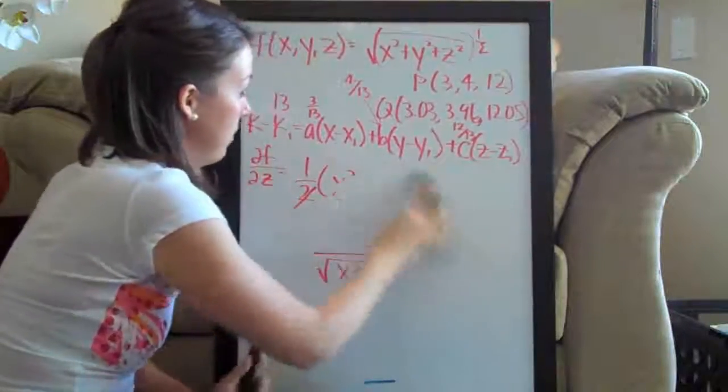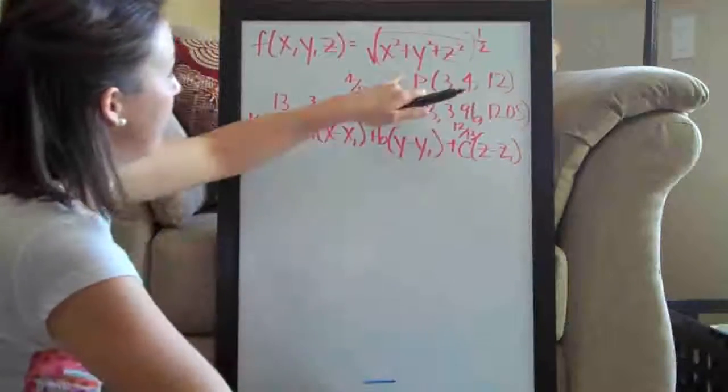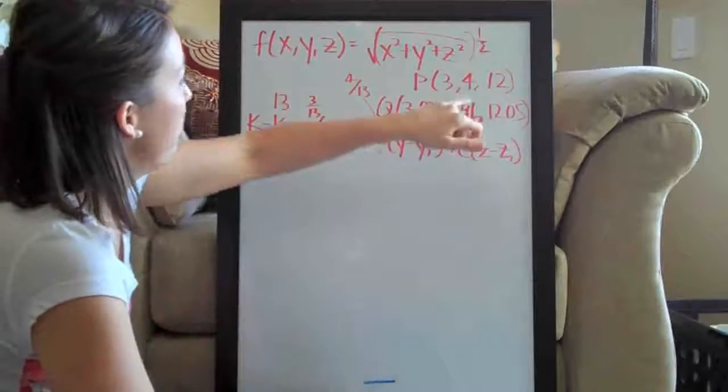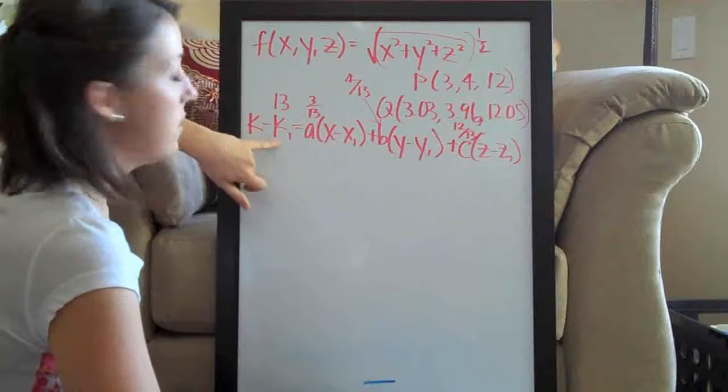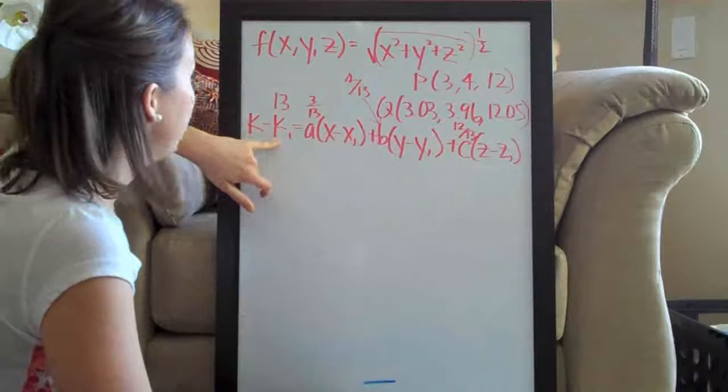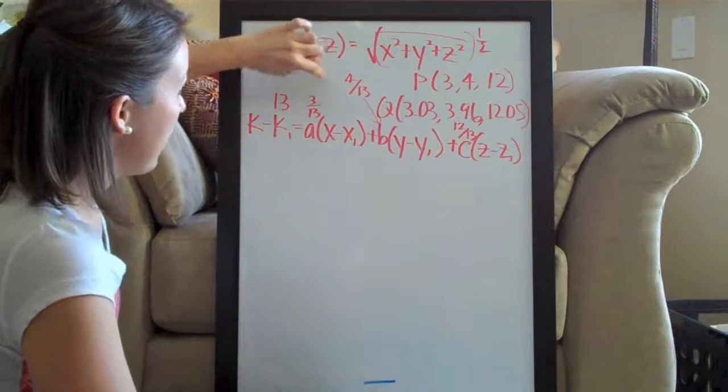So now that we've done, we plugged in the original point, we plugged in the point three, four, twelve to the original function to solve for k one here. Then we took partial derivatives with respect to x, y, and z, and solved for a, b, and c.